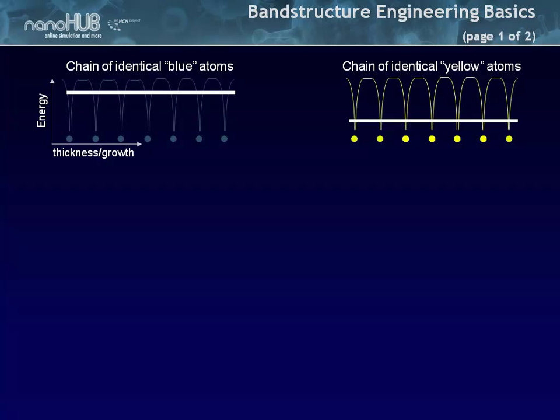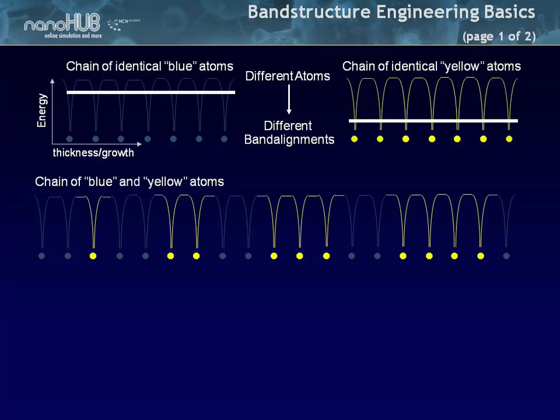Imagine that you have a molecular beam epitaxy and you can put down blue atoms and yellow atoms, whatever blue and yellow is. And we're just going to pick on one conduction band edge. And since blue and yellow are different from each other, these two bands are going to be aligned differently because they're different materials. And since you have an MBE or MOCVD reactor, you can think about building stacks of these devices with blue and yellow atoms. And since their bands are misaligned, you have these gaps in these bands.